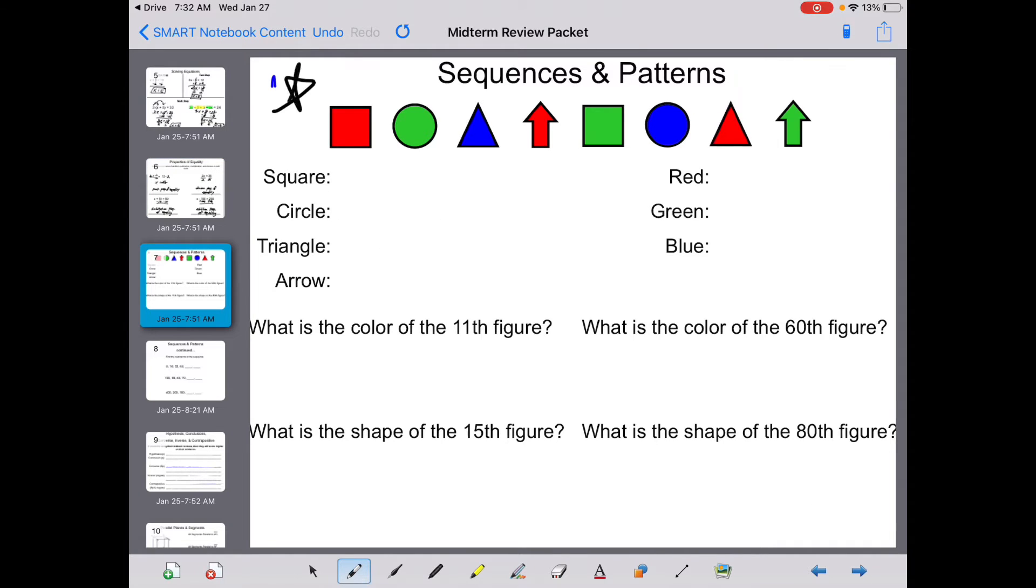Put a big star next to sequence and patterns. There's going to be two of these on the part 2, where you have to show your work. Now, I've already started how you calculate the patterns or the sequence by writing the shape size and by writing the colors.